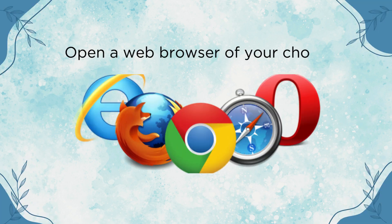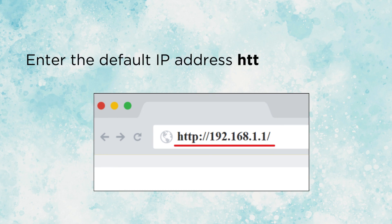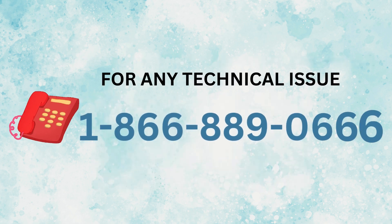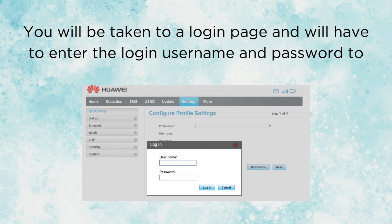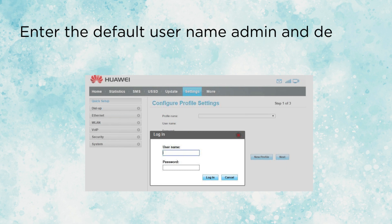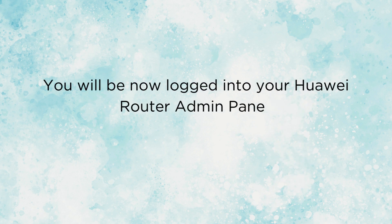Open a web browser of your choice. Enter the default IP address https://192.168.1.1 and press Enter. You will be taken to a login page and will have to enter the login username and password to continue. Enter the default username 'admin' and default password 'admin@huawei.com' and click Login. You will now be logged into your Huawei Router Admin Panel.